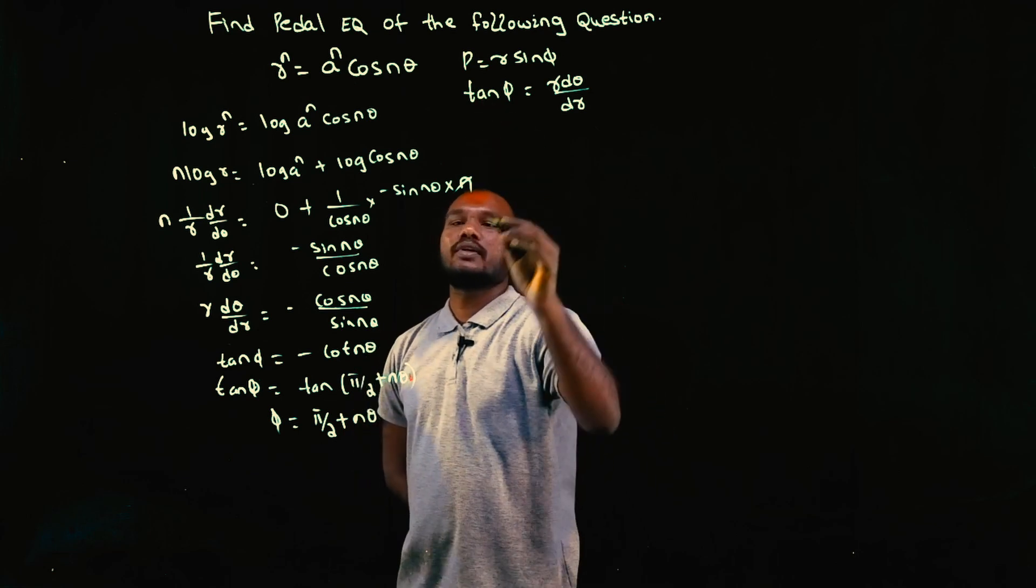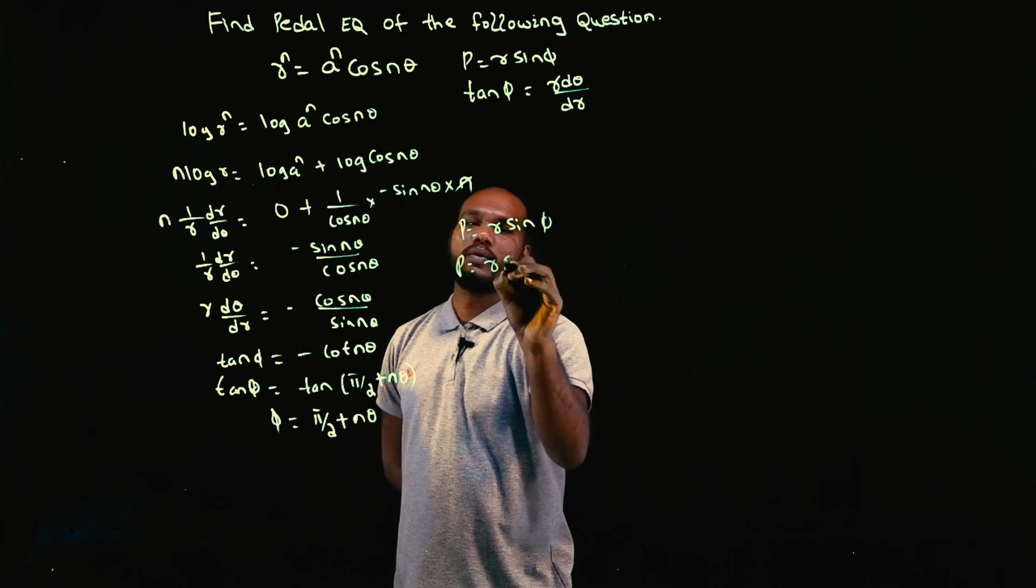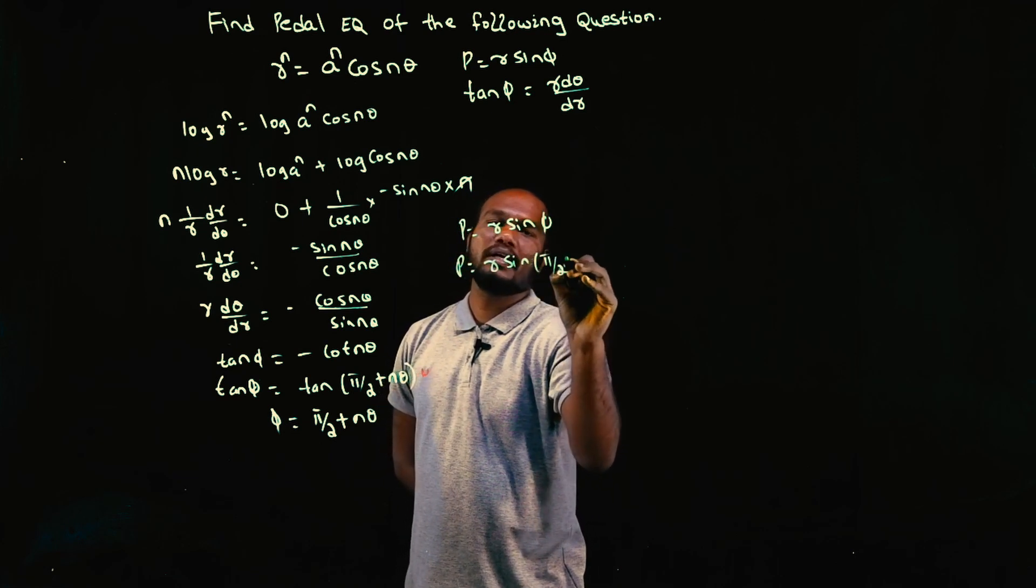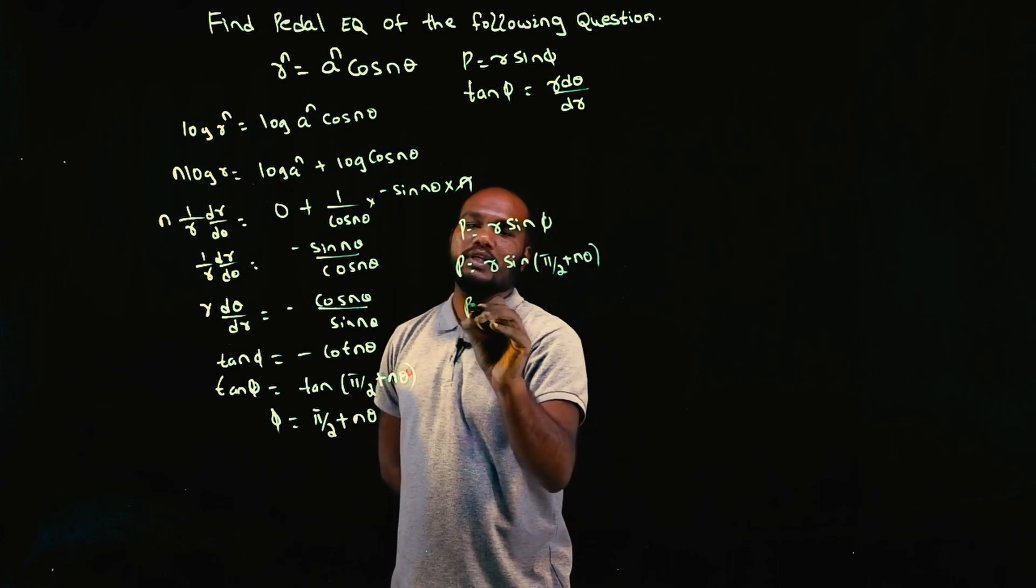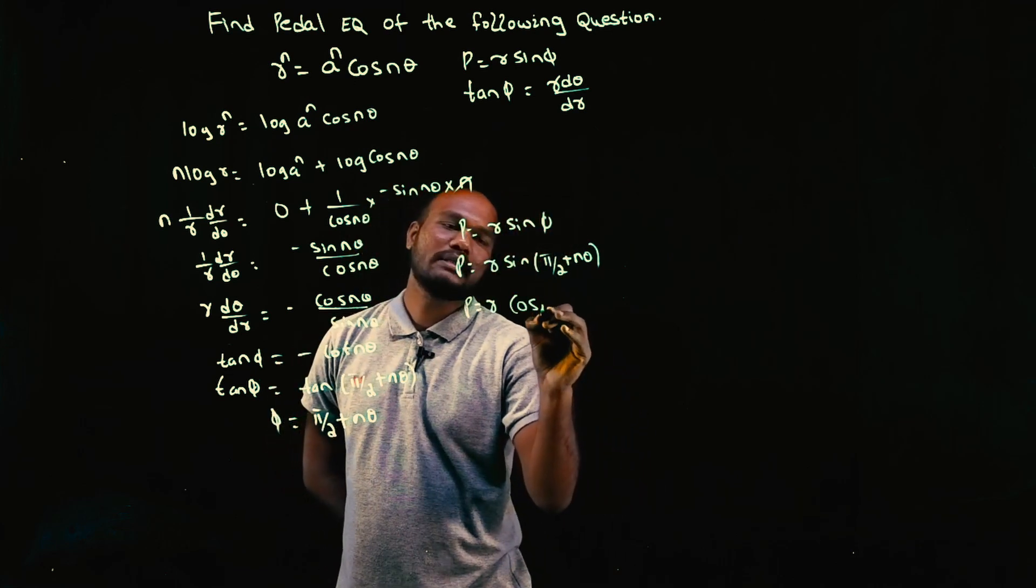So just take and substitute here. P is equal to R sine phi. So P is equal to R sine of pi by 2 plus n theta. So P is equal to R sine pi by 2 plus n theta is what? Cos n theta.